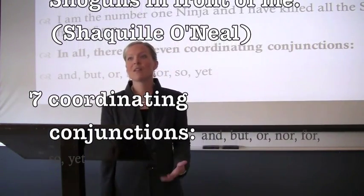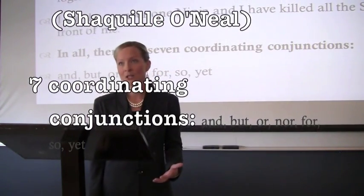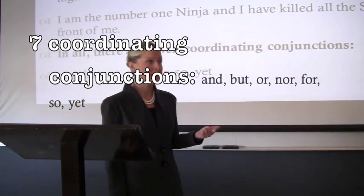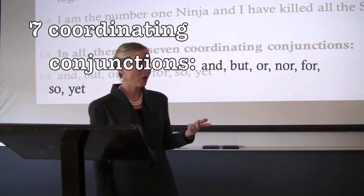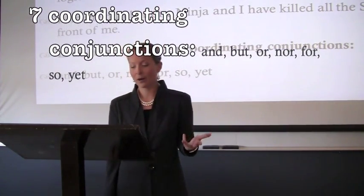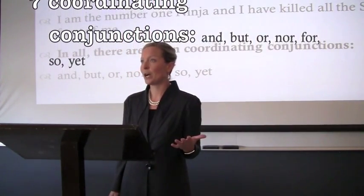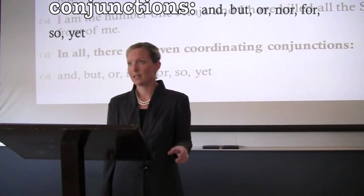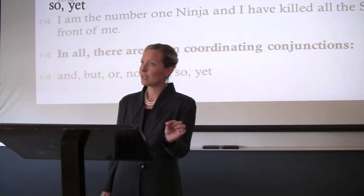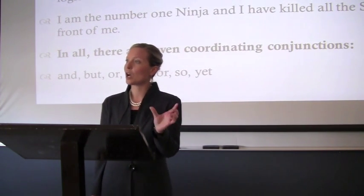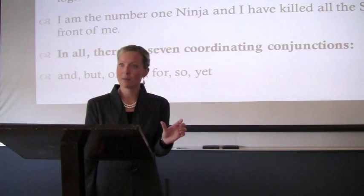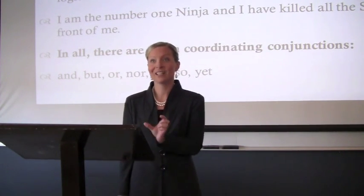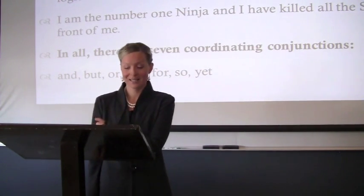There are seven coordinating conjunctions: and, but, or, nor, for, so, and yet. You add a coordinating conjunction to suggest a logical relationship between being a ninja and killing shoguns.